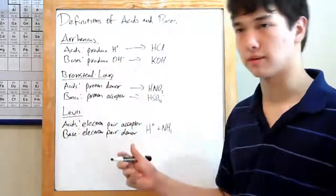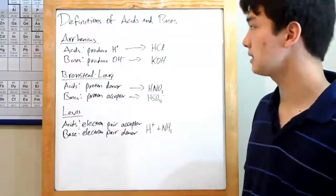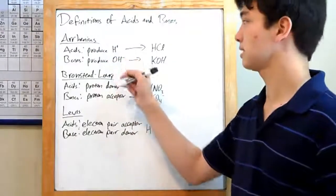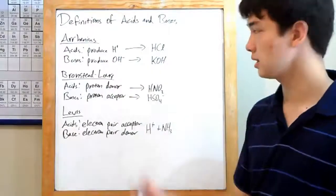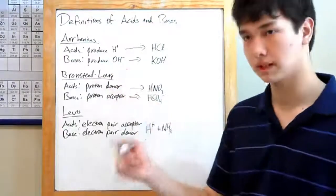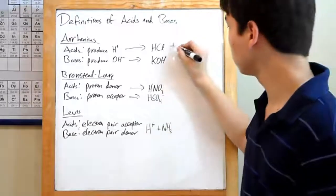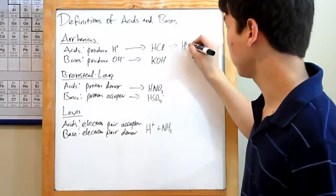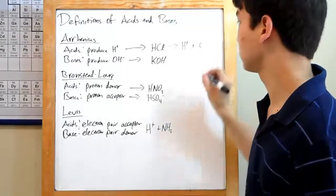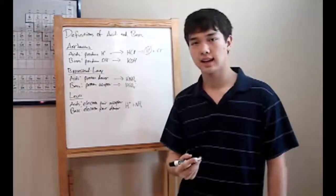Arrhenius was the first one to define acids and bases. He defined acids as substances that produce H plus ions in solution, and bases as substances that produce OH minus ions. An example of this would be hydrochloric acid. Put that in water, and it'll dissociate into H plus and Cl minus ions. Since it produced an H plus, it's considered an acid.